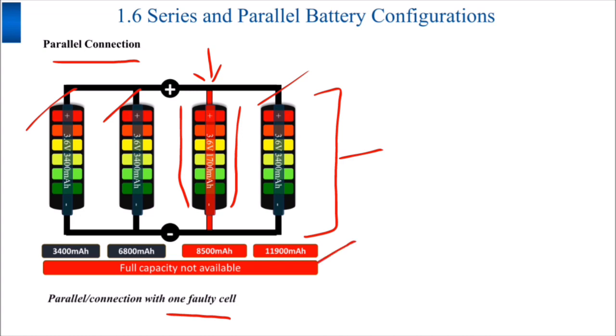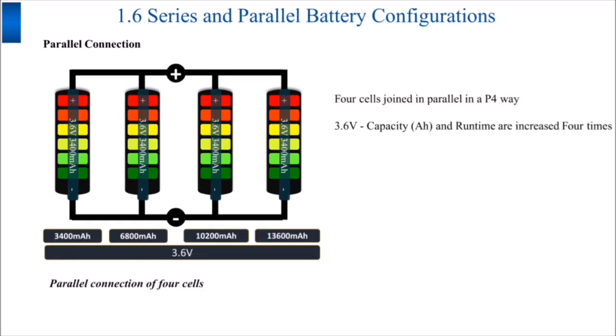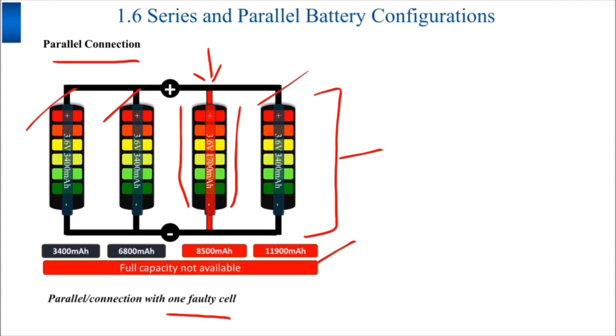In the previous slide, total output from one battery pack is 13,600 milliamps, but here we are getting 11,900 milliamps. We are getting less capacity, which will lower the run time of this particular battery pack.